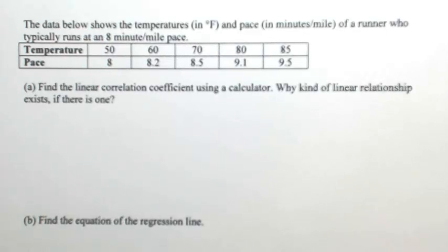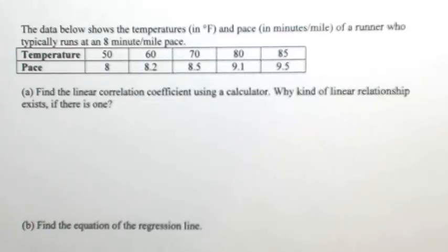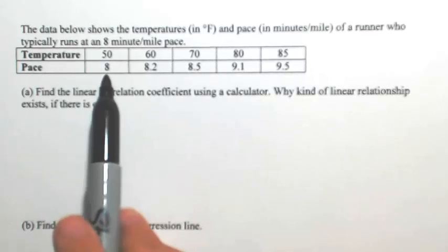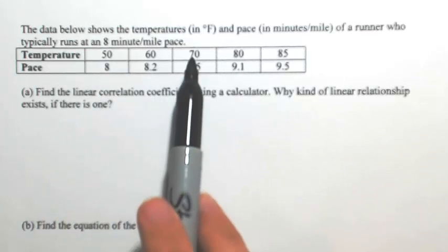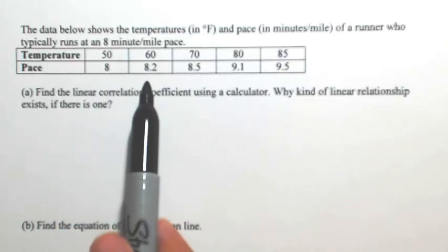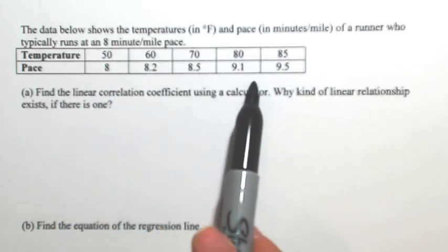The data below shows the temperatures in degrees Fahrenheit and pace in minutes per mile of a runner who typically runs at an 8 minute per mile pace. This table tells us that as the temperature increases, the pace increases — meaning it takes them longer to run a mile.